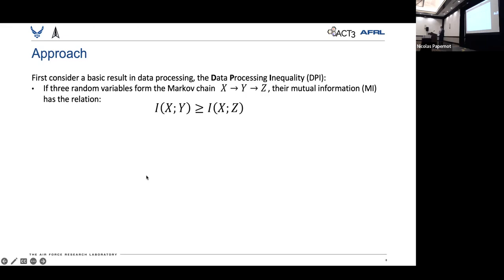then their mutual information has a relationship, as you see on the screen. And so it states that the mutual information between X and Y will act as an upper bound on the mutual information between X and Z.